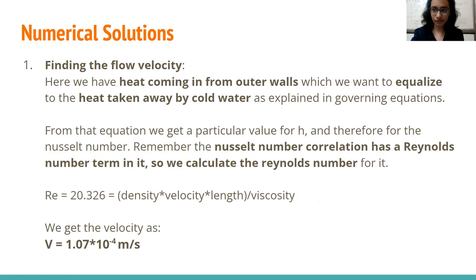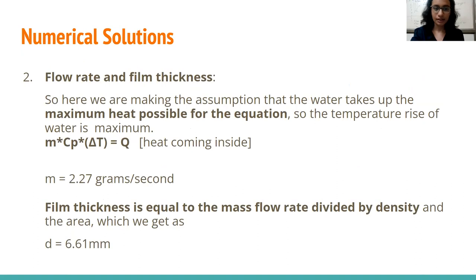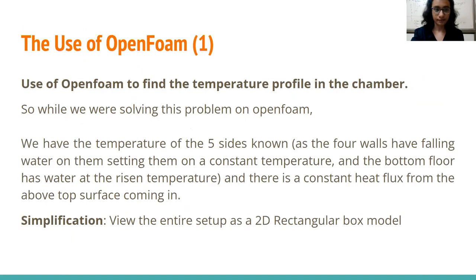This is the numerical part of the calculation in which we are finding the flow velocity. So after equating the heat fluxes we find a value for h and then we find the Nusselt number from this correlation. Then we find the Reynolds number and once we have the Reynolds number we can get the velocity by plugging in the formulas. We then move on to find the flow rate and the film thickness by using mCp delta T is equal to the heat flux following which film thickness is obtained by dividing the mass flow rate by the density.